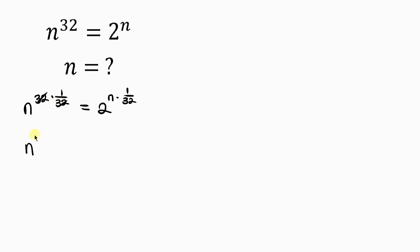n to the 1 is n, but I'm still going to put a 1 here for a reason. Equal to 2 to the n times 1 over 32 is n over 32. Now, notice that the exponent on the right contains the variable n. In order to remove n from this exponent on the right, I'll be multiplying the exponent of both sides by 1 over n.